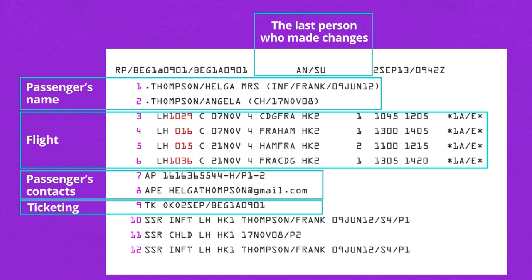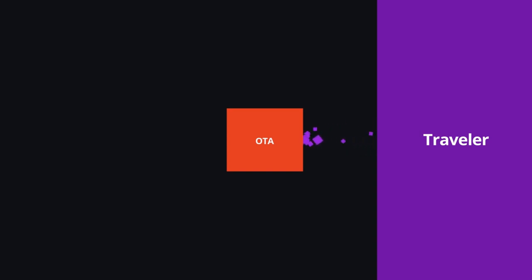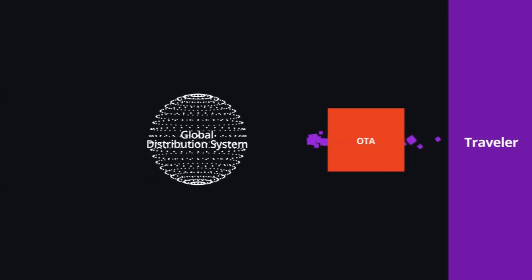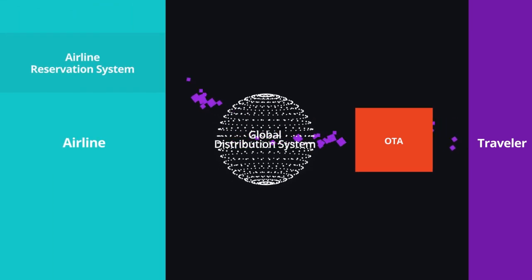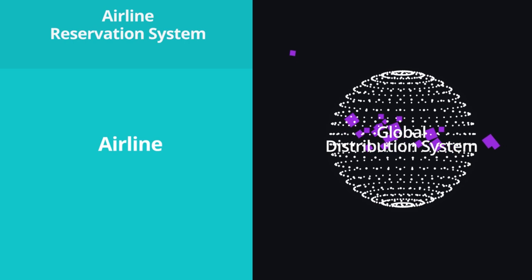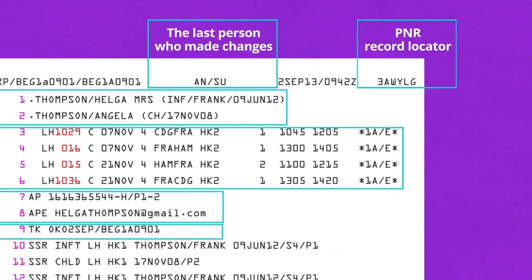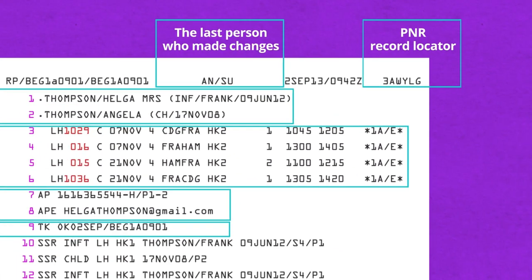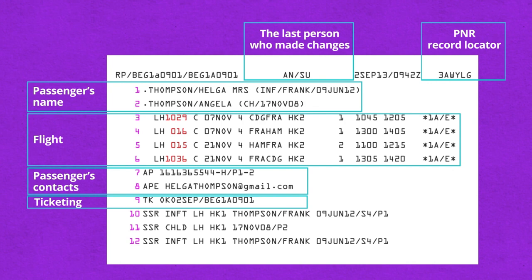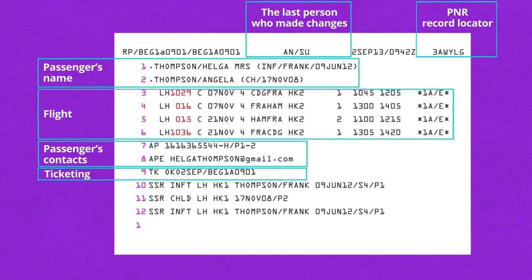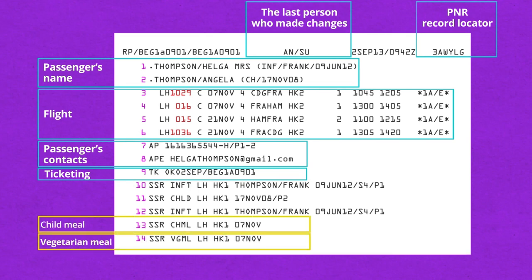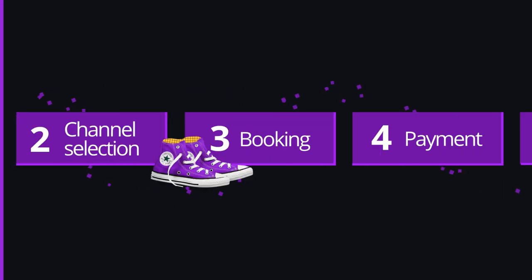When the PNR is first created, in most cases it will be the passenger's name. If the booking is made by an OTA website, it sends all PNR information to the GDS, which redirects it to the airline. Once the airline receives all mandatory details, it generates a record locator — a unique six-character code. Over time, other data will be added to the PNR, for example if a traveler books a hotel room via the same OTA or buys in-flight food via the airline's website.